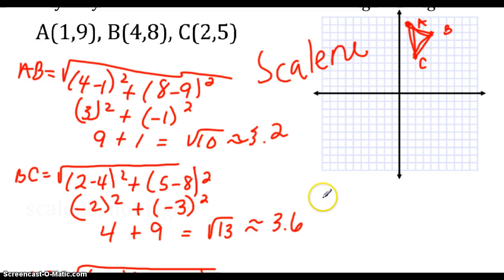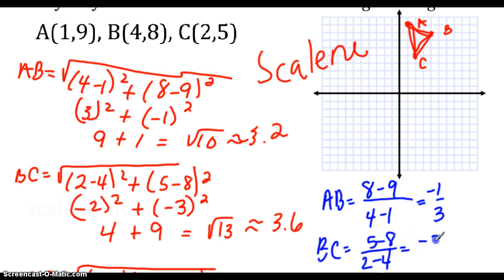What I need to do next is find the slope of AB, BC, and AC, and determine if any of those are opposite reciprocals. Because if they are, that means those lines would be perpendicular. So the first thing I'm going to do is the slope of AB. Get out your formula sheet if you can't remember. So it's Y2 minus Y1, which is 8 minus 9, and then 4 minus 1. So my slope is negative 1 over 3. Then I'm going to do the slope of BC. I'm going to take 5 minus 8 over 2 minus 4, so I'm going to get negative 3 and negative 2, which results in 3 halves.